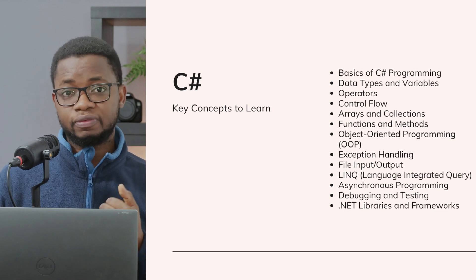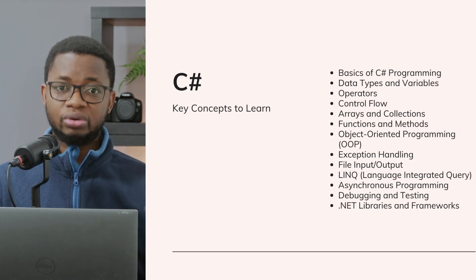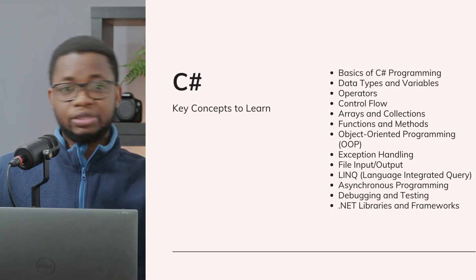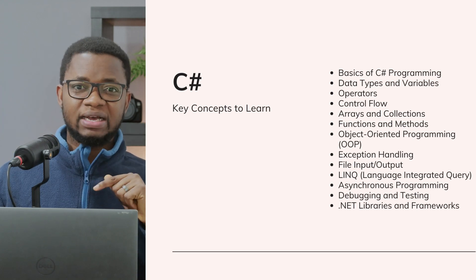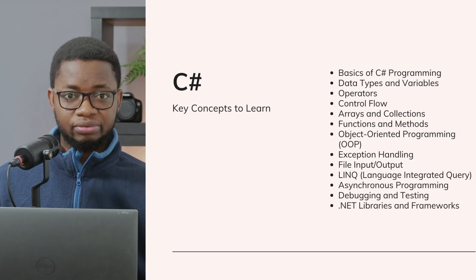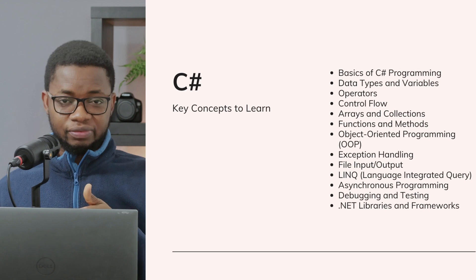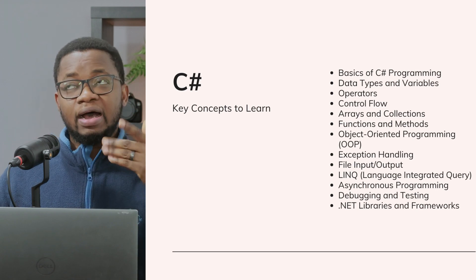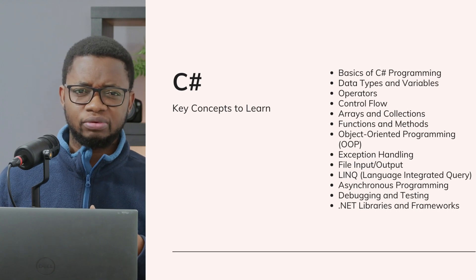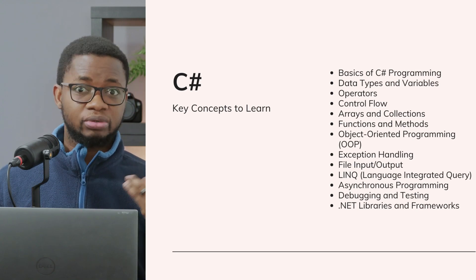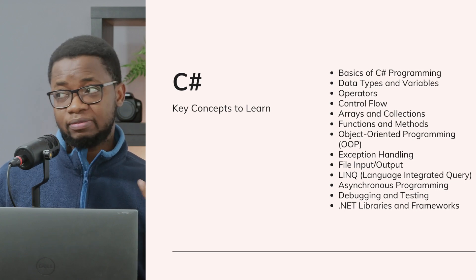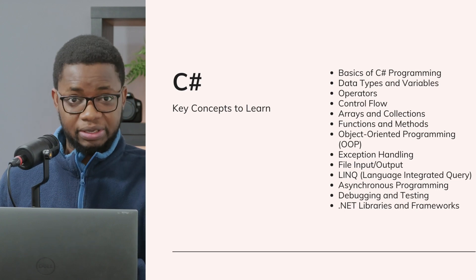After operators, you'll learn control flow — how to use conditionals and loops to control the flow of your program and how your program branches from one place to another. After that, you learn arrays and collections: how to manipulate arrays and collections like lists, dictionaries, and similar types. Then you'll learn functions and methods — how to define methods, perform method overloading, and understand how to pass arguments into methods.